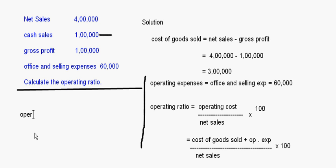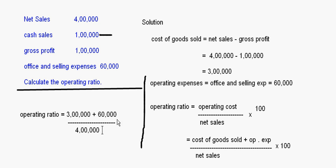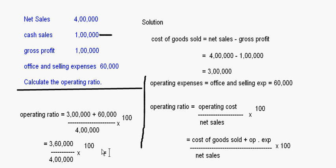So the operating ratio will be equal to three lakhs plus sixty thousand upon net sales of four lakhs into 100. This becomes three lakh sixty thousand upon four lakh into 100, which comes as 90 percent. So the operating ratio is 90 percent.